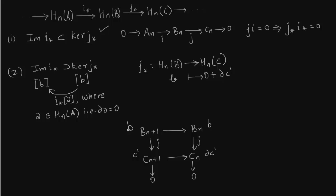So c' now gets lifted to b' because j is a surjective map. So this we have shown multiple times that map j is surjective and map i is injective. Now what we want to do is we want to find this element a in HnA and this a in HnA obviously comes from An because HnA consists of kernel of delta over image of delta which essentially act on An.